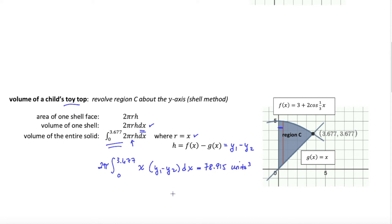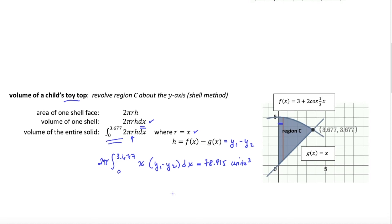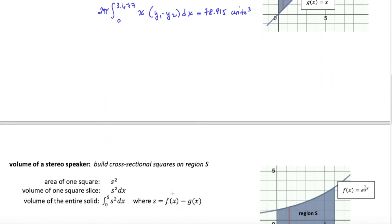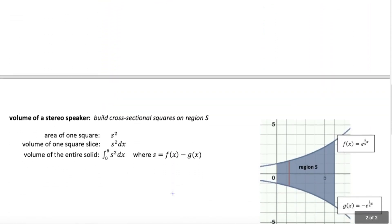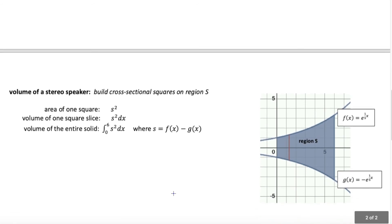So we've looked at disks, washers, and shells — the results of rotating a region about an axis. The final three examples are what happens when you don't revolve the region, but instead build geometric shapes on it. The first one is building a stereo speaker. I have two functions forming a region from 0 to 6, and on any strip here we're going to build a square that comes out of the screen right towards you.